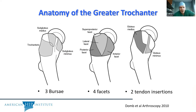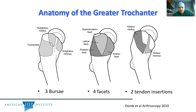Focusing on the anatomy, looking at the greater trochanter, there are three bursa: the trochanteric bursa, which most everyone is familiar with, and the subgluteus medius and subgluteus minimus bursa, which can also be inflamed. As far as tendon insertions, there is the medius insertion, which has a broad insertion over the greater trochanter, and the minimus insertion, which is more anterior. There are four palpable facets of the greater troch: the anterior facet, superior posterior facet, lateral facet, and posterior facet. The gluteus medius attachment encompasses and spreads out over the posterior three facets.